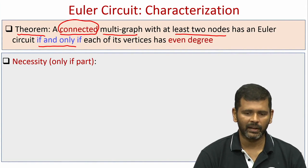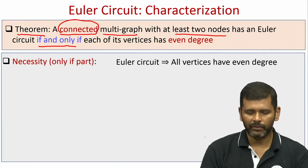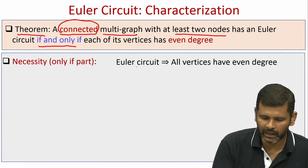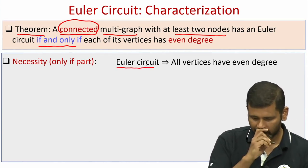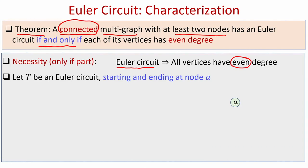We will prove both the necessity and sufficiency conditions. Let us first prove the necessity condition — the only-if part. We have to show that if the graph has an Euler circuit then each vertex has even degree; you cannot have any vertex with odd degree. Imagine an arbitrary graph which indeed has an Euler circuit; I am calling that Euler circuit T. Since it is an Euler circuit, T will start and end at the same vertex, which I am denoting as node A.